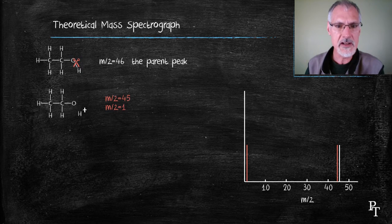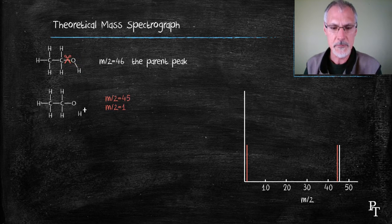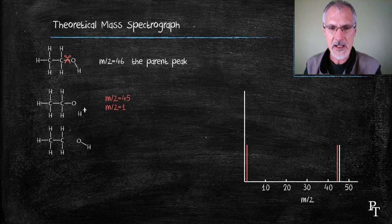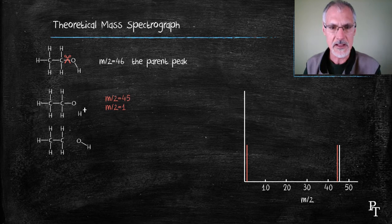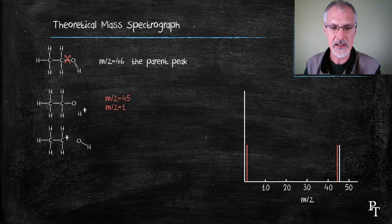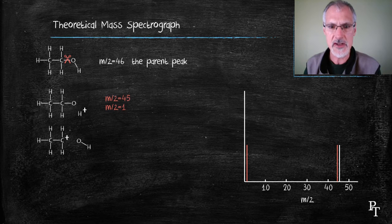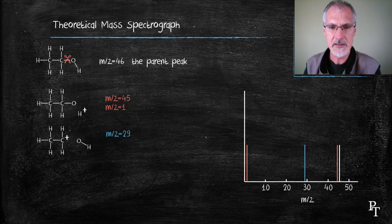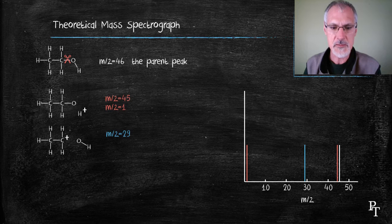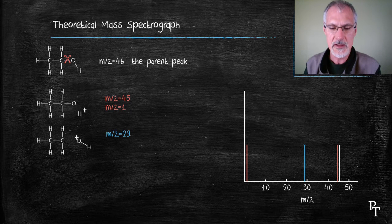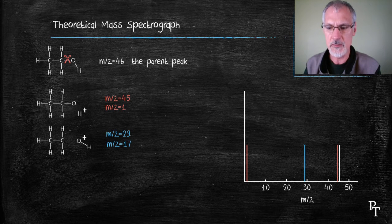But this substance could also break at another point, at the OH group. And if it broke there, I would have these two fragments. Again, the larger fragment on the left-hand side would have a mass over charge ratio of about 29. And if that charge was to reside with the OH group, then I would have a mass over charge ratio of about 17.